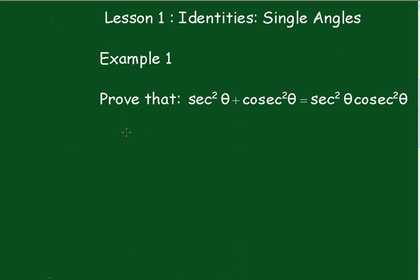Okay, now we'll start with the left hand side. So LHS = sec²θ + cosec²θ.